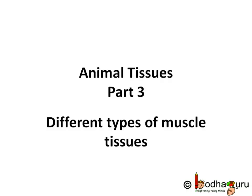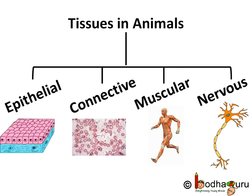Hello everyone. We have been talking about the various tissues in animals. We already know about the epithelial tissues and the connective tissues. Other than these, there are muscular tissues and nervous tissues. So let us understand more about them.